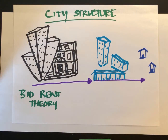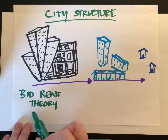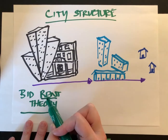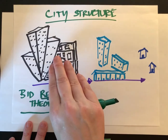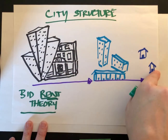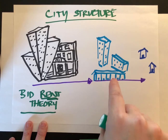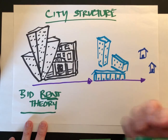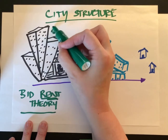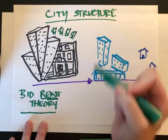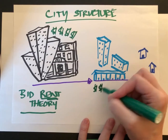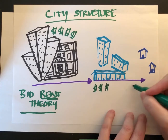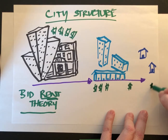Hi folks, we are continuing with city structure and we're looking at something called bid-rent theory. The rent part is what we want to pay attention to. Bid-rent theory talks about the value of land from downtown further out — where the land is most valuable you tend to have the highest rents, and where the land is seen as less valuable, the rents and the cost of that land drops the further you go out.